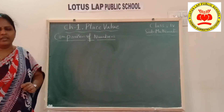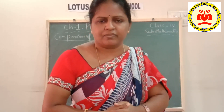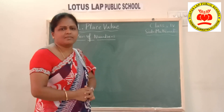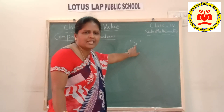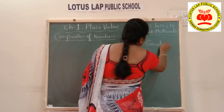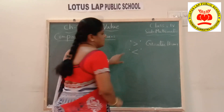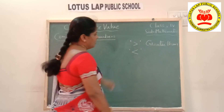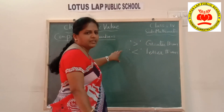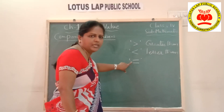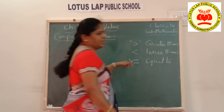The first and foremost rule in comparison of numbers — I think you have already learnt the symbols for comparison, so let's recall what they are. The first symbol is greater than. The next symbol is smaller than, or lesser than, or less than. Then one more — equal to. These three symbols we will be using when we compare numbers.